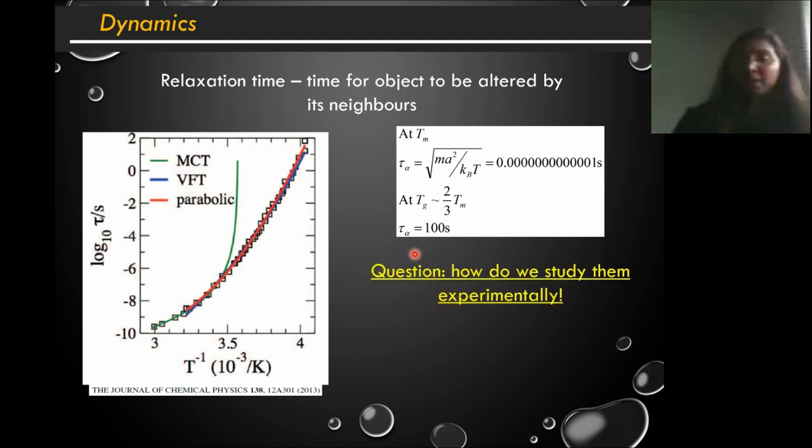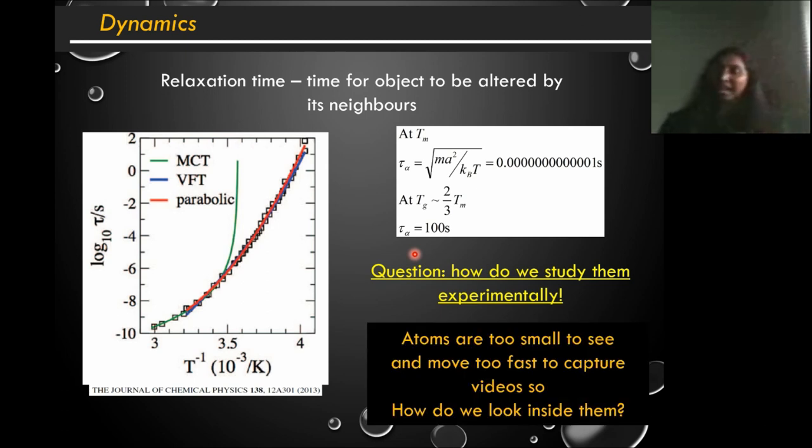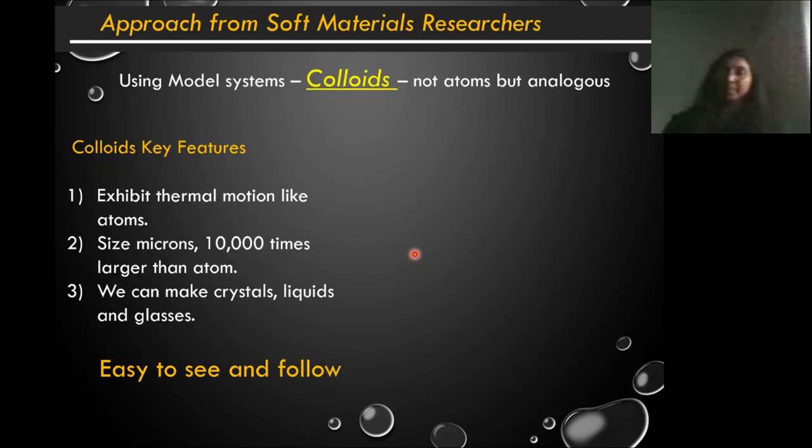One thing as an experimentalist I'm interested in is of course how do I study the atoms experimentally. There could be multiple ways to do it but I want to look at them. And it's really difficult to see atoms, they are too small and they are too fast which means I can't capture videos very easily. So the question remains how do I look at them when they are moving. So a lot of soft matter researchers or scientists like me use these systems which are models, they are called colloidal systems.